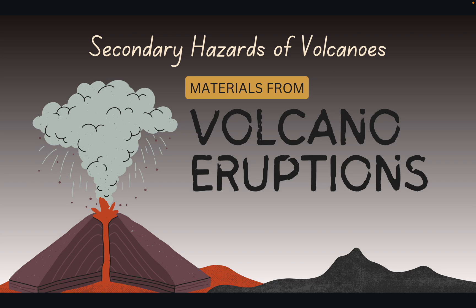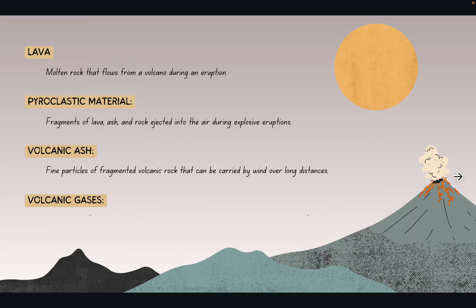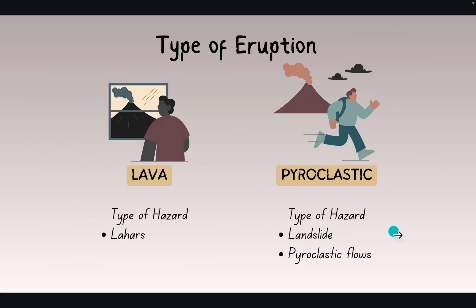Secondary hazards of volcanoes — materials from volcanic eruptions. Types of secondary hazards include lahars, pyroclastic flows, ash fallout, acid rain, ash cloud, and landslides — all are secondary hazards after a volcano erupts. Types of eruption include lava eruptions and pyroclastic eruptions. The types of hazard with lava are lahars, pyroclastic landslides, and pyroclastic flows.